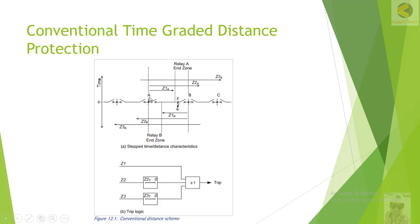The breaker at Station A will trip in Zone 2, which is 250 to 400 milliseconds depending on system protection settings. I have seen mostly 300 to 350 milliseconds used. In this case, the breaker at Station B opens immediately, while the breaker at Station A trips with a time delay. The disadvantage is that the fault will be fed by the system unnecessarily for, say, 300 milliseconds.